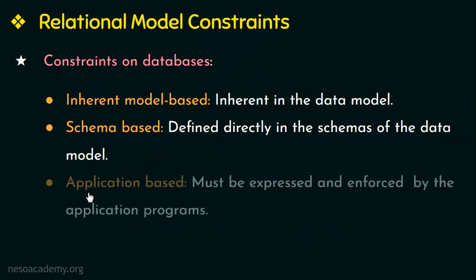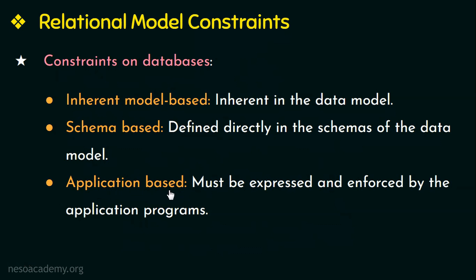The last category is application-based constraints, also called semantic constraints. These constraints cannot be directly defined in the schemas — they are difficult to express within the data model and so they are expressed and enforced by the application programs. Another important category is data dependencies, which includes functional dependencies and multi-valued dependencies. This category is used mainly for testing how good the design of the relational databases is, and it is used in normalization, which we will be learning in the later chapters.